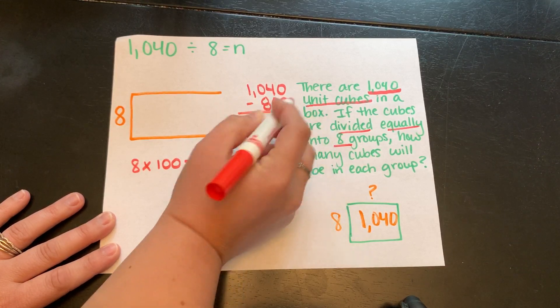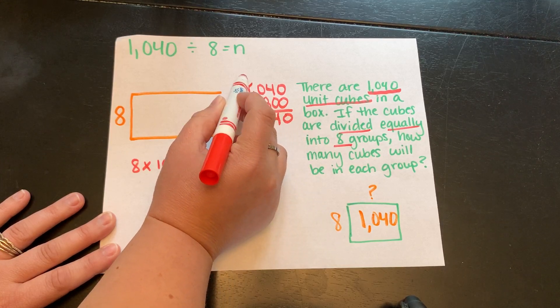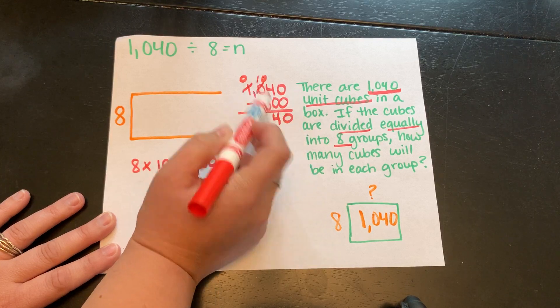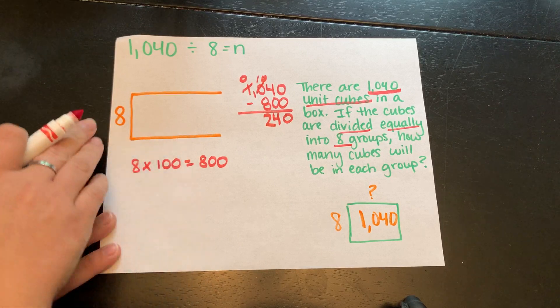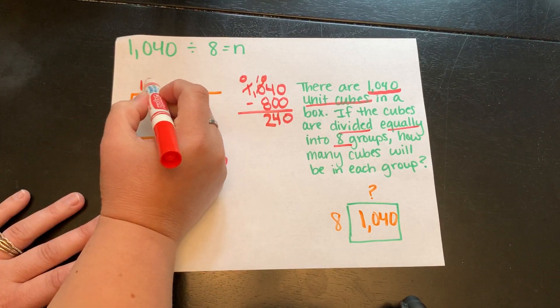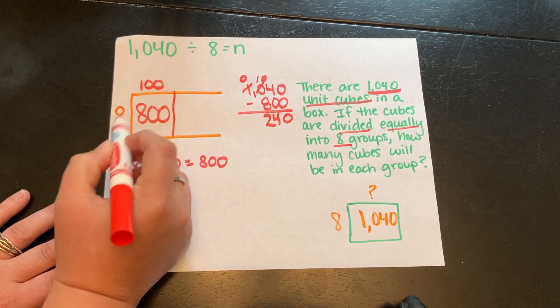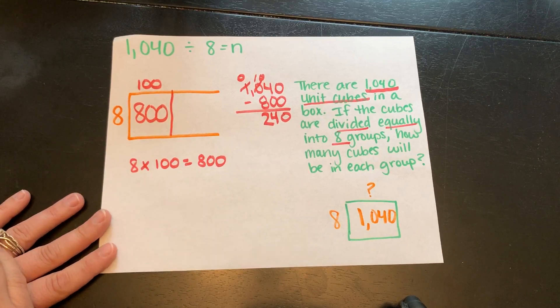So I'm going to take this and subtract. 0, 4 minus 0 is 4. Can't take 8 from 0. So we're going to come over here and borrow. 10 minus 8 is 2. So let's fill in our array. We did 8 times 100. Our partial quotient goes on top. The answer goes inside the array. 8 times 100 was 800. Now we have 240 left.